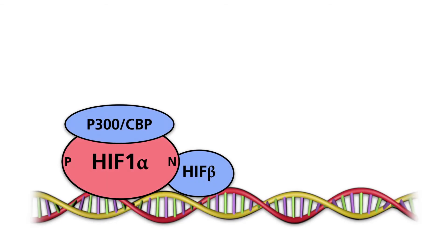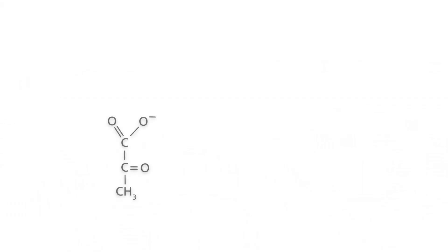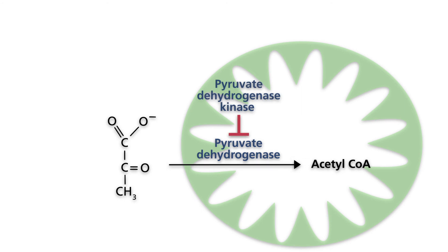Two target genes of HIF-1-alpha are of the utmost importance for glycolysis regulation. The LDHA gene encodes an isoenzyme of lactate dehydrogenase and the PDK1 gene encodes an isoenzyme of the pyruvate dehydrogenase kinase. Under aerobic conditions, pyruvate is decarboxylated and oxidized by pyruvate dehydrogenase to generate acetyl coenzyme A. Most of the pyruvate is completely oxidized to carbon dioxide in the course of the tricarboxylic acid cycle. Pyruvate dehydrogenase kinase phosphorylates and inhibits pyruvate dehydrogenase, and HIF-1-alpha stimulates the synthesis of pyruvate dehydrogenase kinase.